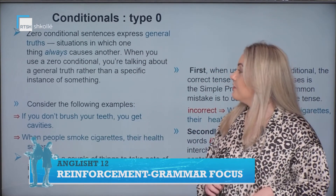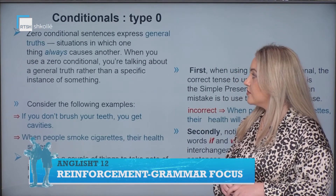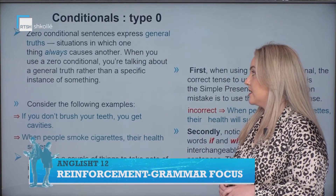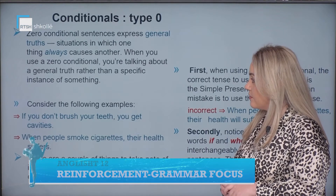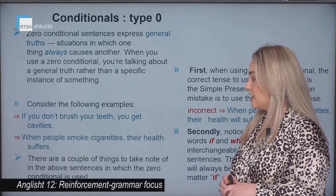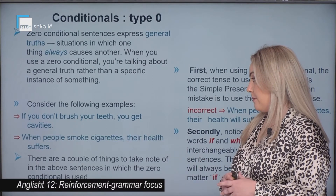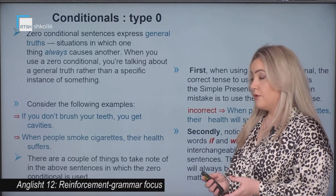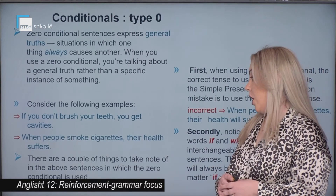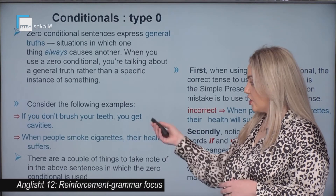Type zero of the conditionals. Zero conditional sentences express general truth situations in which one thing always causes another. When you use a zero conditional, you're talking about a general truth rather than a specific instance of something. For example, if you don't brush your teeth, you get cavities.